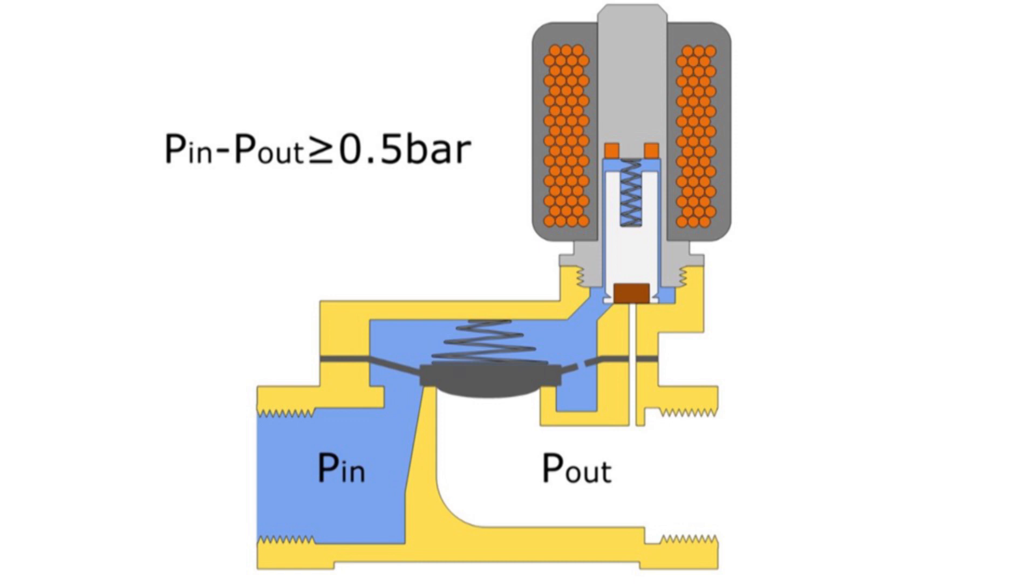Indirect operated valves require a differential pressure of typically 0.5 bar to open. Indirect operated solenoid valves are also referred to as servo or pilot operated.